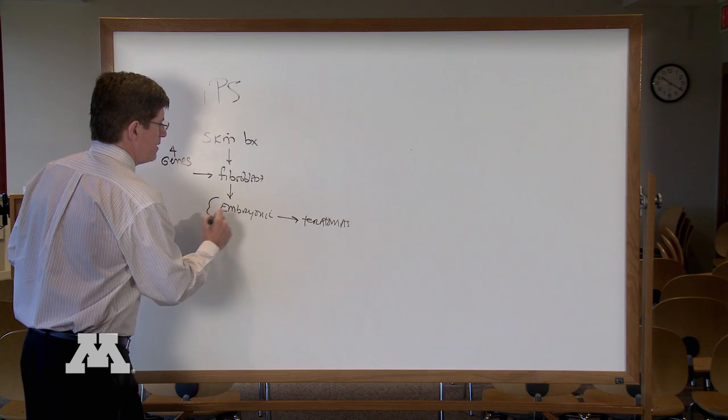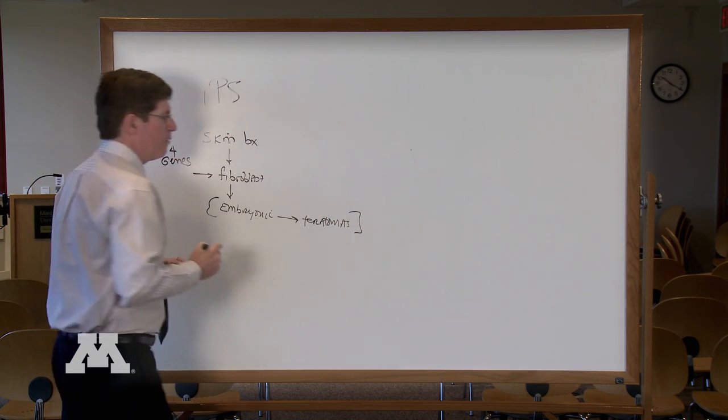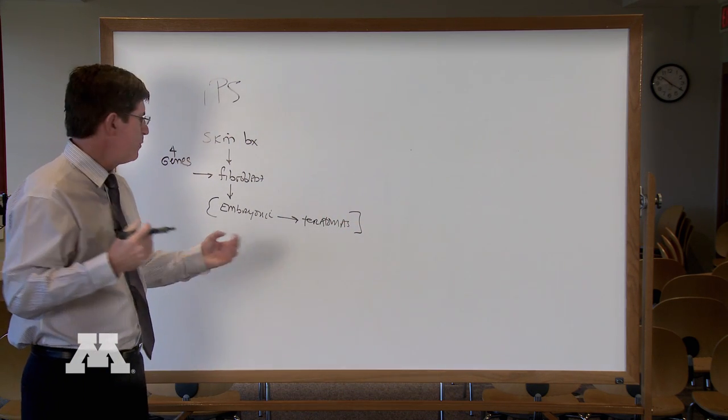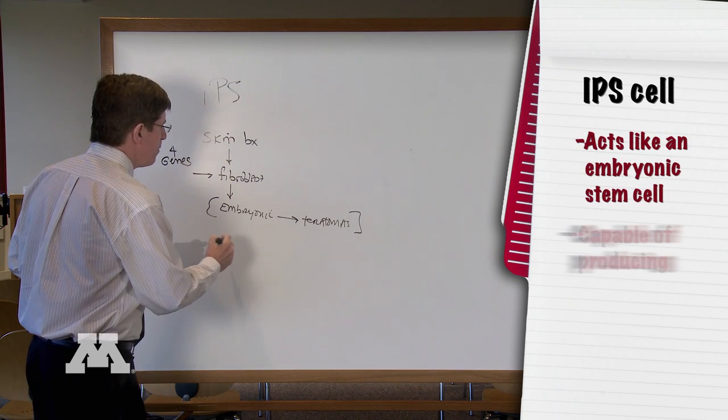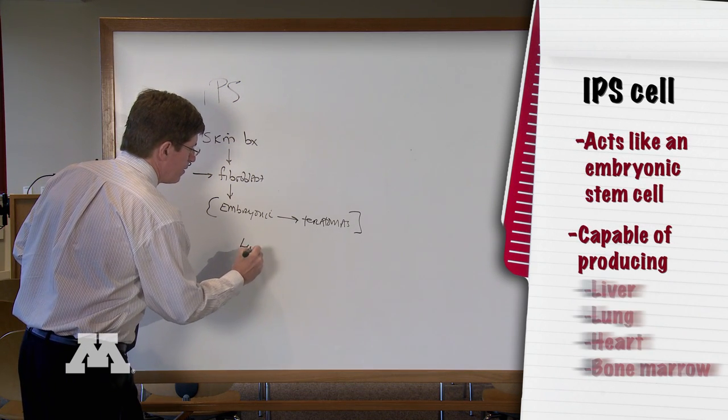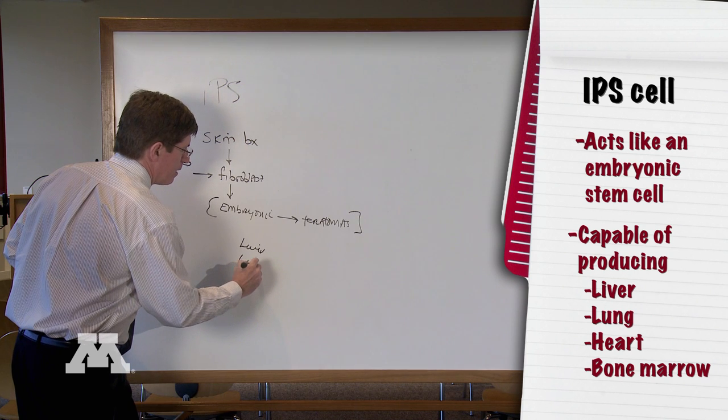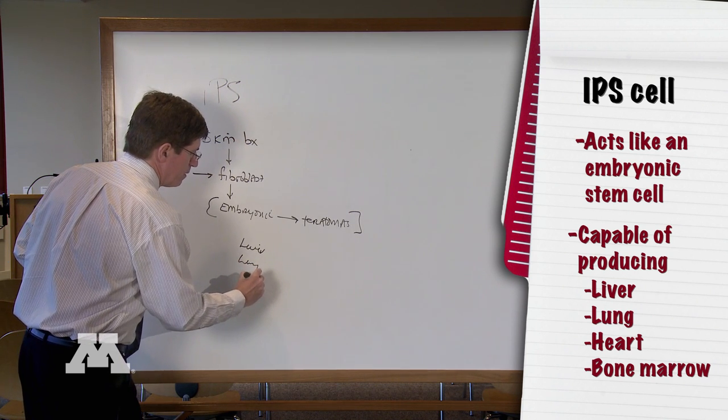So this is now the definition of what an IPS is, by being able to act like an embryonic stem cell, capable of producing liver, lung, heart, bone marrow.